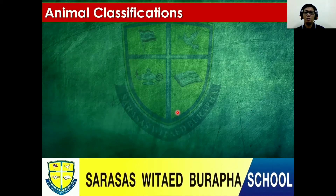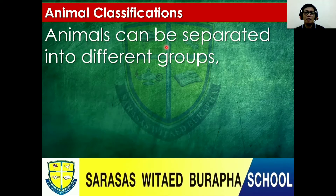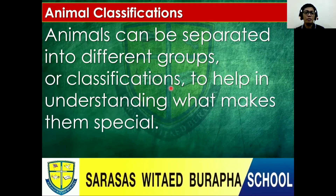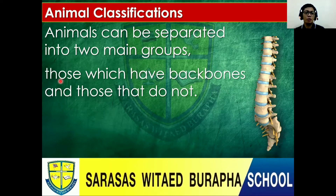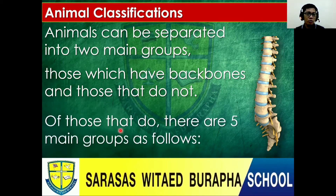It's about animal classifications. What does it mean by animal classifications? Animals can be separated into different groups or classifications to help in understanding what makes them special. Animals can be separated into two main groups — those which have backbones and those that do not. As you can see in the picture, that is a backbone. Like us humans, we have backbones, and most animals do as well. Of those that do, there are five main groups as follows.